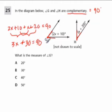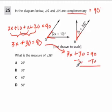And now to figure out X, we can subtract 30 from both sides. Do that over here. So 3X plus 30 is 90. Subtract 30 from both sides. What do we get?